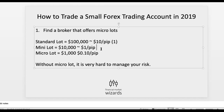For a mini lot, it actually represents 10,000. In MetaTrader it's 0.1, and it represents $1 per pip. And a micro lot represents 0.01 in MetaTrader, which is a position size of $1,000 — about $0.10 per pip.